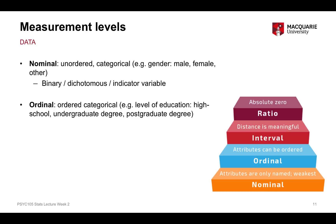The next level up is called an ordinal variable. Ordinal variables are still categorical — distinct types or categories — but there is an order to the levels. For example, level of education: at maximum a high school education, at maximum an undergraduate degree, or at maximum a postgraduate degree. This is still a categorical variable with categories or types, but it's ordinal because a postgraduate qualification is a higher level than undergraduate, and undergraduate is higher than a high school diploma.